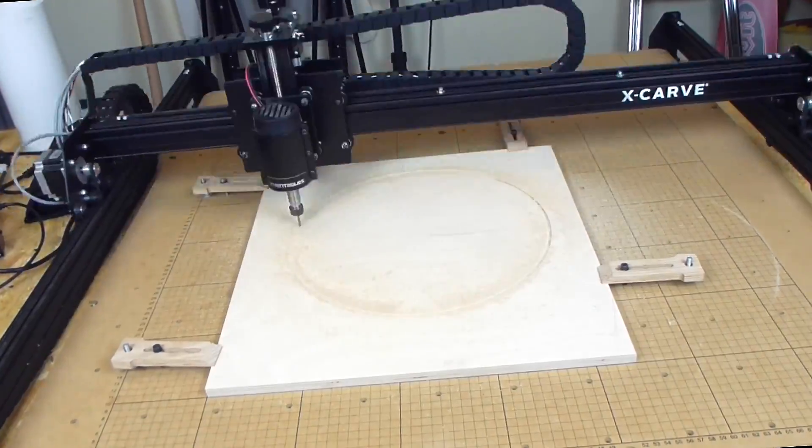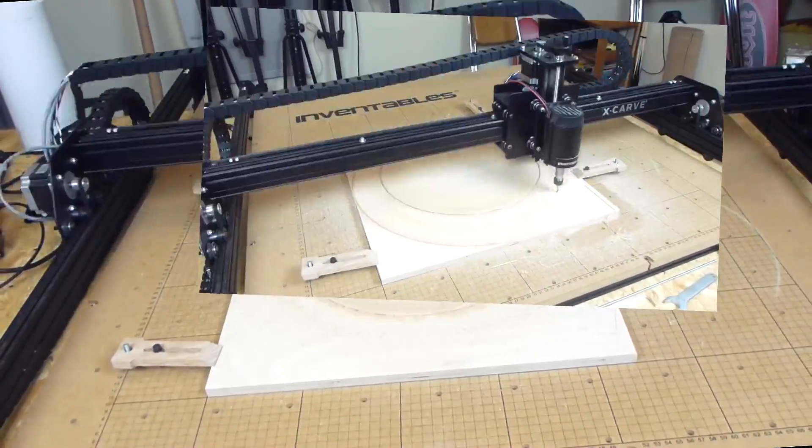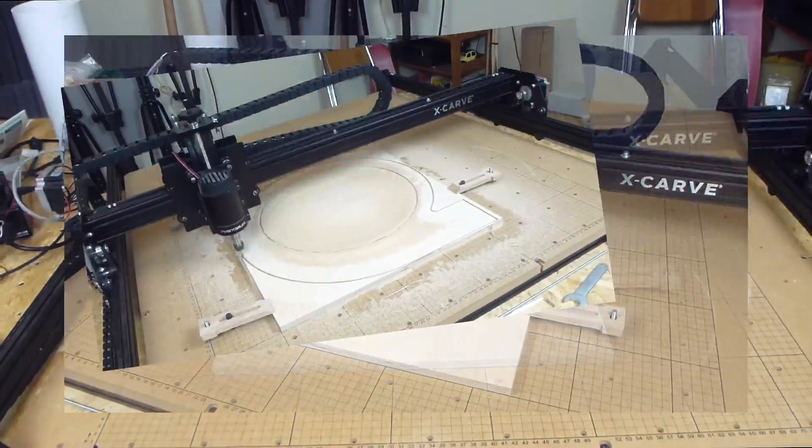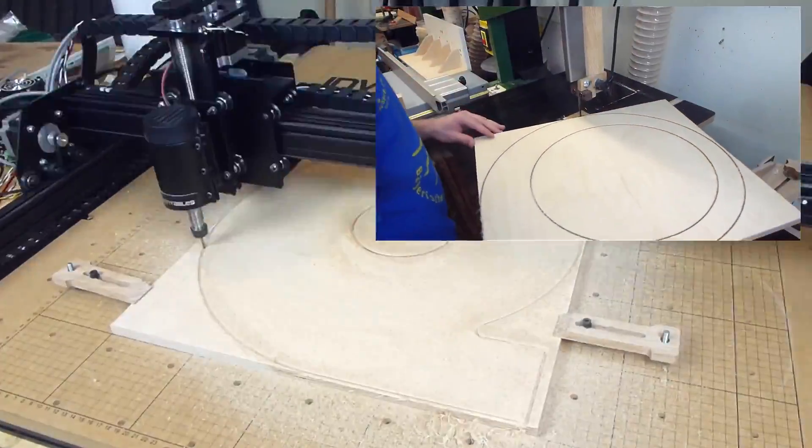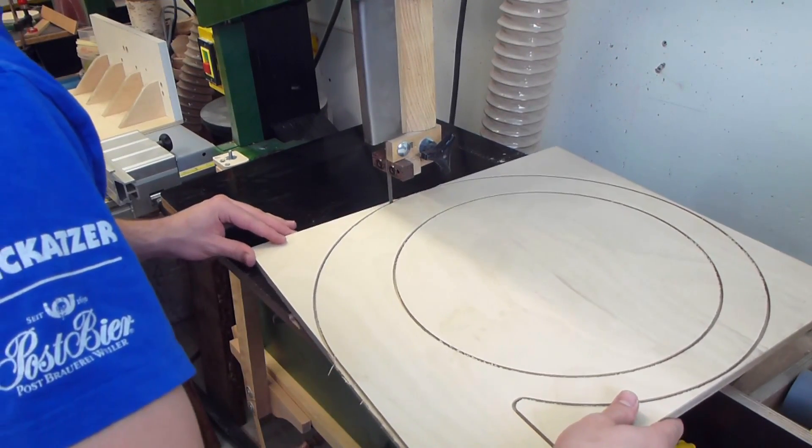I again let the CNC cut these shapes but with one to one paper templates it would be just as simple. I also let it only cut halfway through so it doesn't take as much time. I then cut these shapes out and flush trimmed the rest.